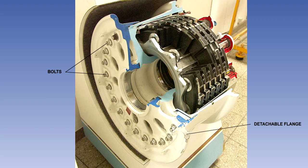The detachable flange type of wheel has the flange secured to the wheel body by nuts and bolts. A detachable flange may be a single piece or two or three pieces bolted together. The advantage of the loose and the detachable flange type of wheel is that the tyre can be changed without removing the wheel from the aircraft.